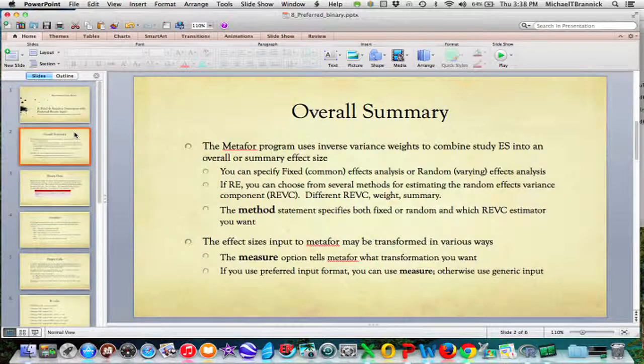For the overall summary, Metaphor uses inverse variance weights to combine the effect sizes to one overall summary. You can specify fixed or random effects. If you specify random effects, you can specify the algorithm, the kind of calculation used to find the random effects variance, and you do that with the method statement.